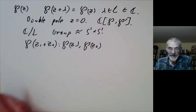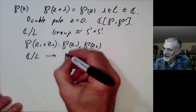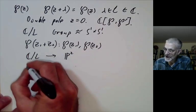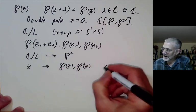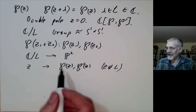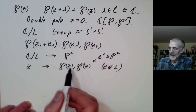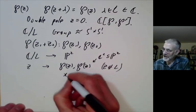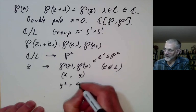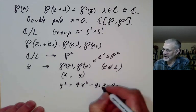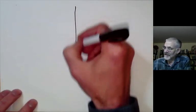We'd also like to know what it does to the derivative. We recall that we have a map from C modulo L to the projective plane, which takes z to (P(z), P'(z)) when z is not in L, and takes points of L to the point at infinity. Writing affine coordinates x and y, we recall the differential equation satisfied by P says that y² = 4x³ - g₂x - g₃ for suitable constants g₂ and g₃. This is an example of an elliptic curve.